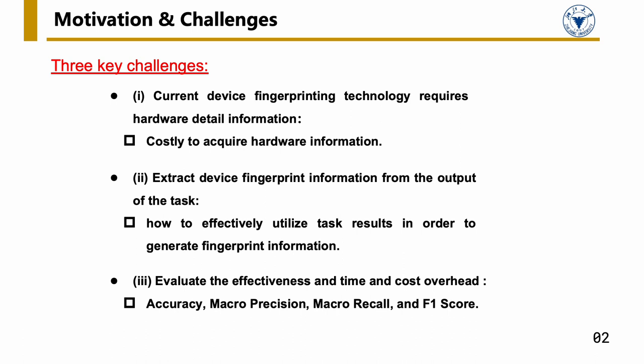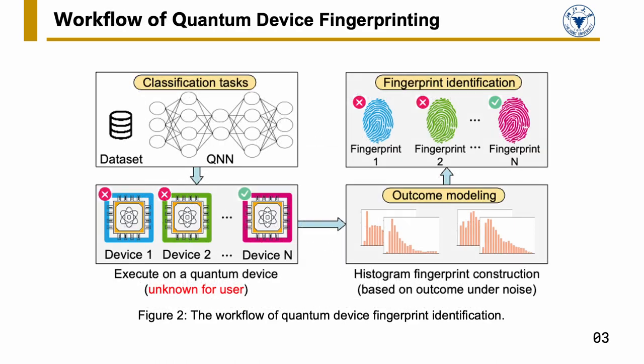The high-level workflow of TDQDF refers to QN in noise-free training and noisy quantum circuit execution, then utilizes their outcome histogram modeling for fingerprint identification. The generated per-qubit histogram fingerprint will be vectorized and subsequently fed into machine learning models for device identification.